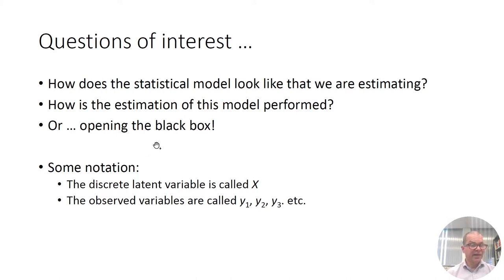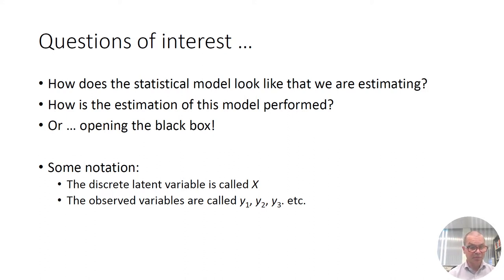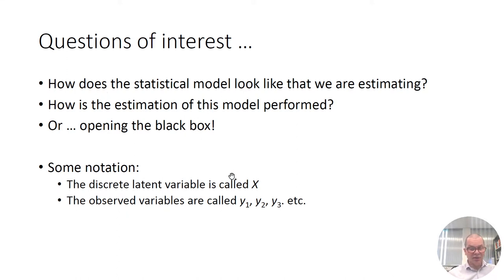To define the model formally, we need some notation. I'm going to denote the latent variable — the cluster variable — with the symbol X (uppercase). So X can take on the value 1, meaning belonging to cluster number 1, and can take on the value 2, belonging to cluster number 2. The observed variables are called y1, y2, y3 in the data file. More generally, I will use the symbol y for observed variables, indexed 1, 2, 3, etc. In this case, we have only three variables.